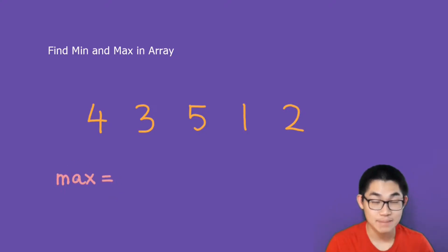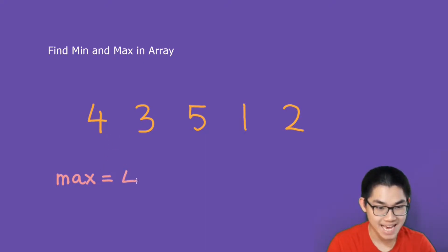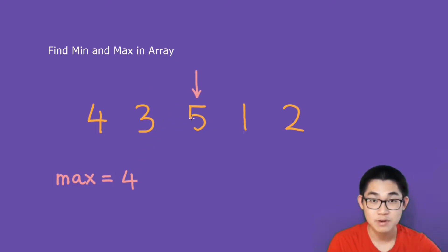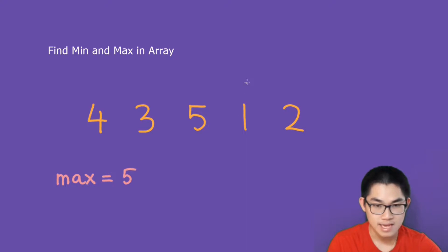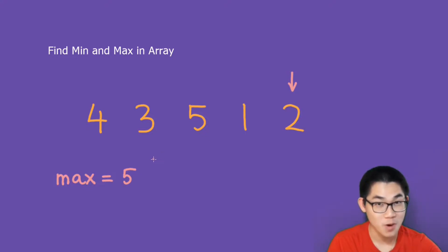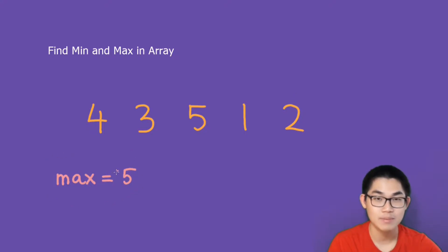How about finding the maximum number? Well, the algorithm is very similar. We take number four and we pretend this is the maximum number. Then we start at the second element of the array. Is number three bigger than number four? No, it is not. So we move on to the next one. Is number five larger than number four? Yes, it is. So we replace this four with number five. And then we move to the next number. Is number one bigger than number five? No, it is not. So we move on. Is number two bigger than number five? No, it is not. And we see that we're at the end of the array, and now we know what the maximum number is, which is five.